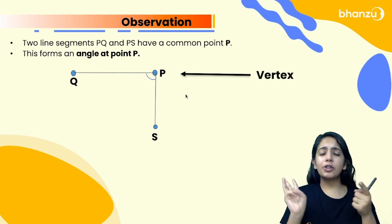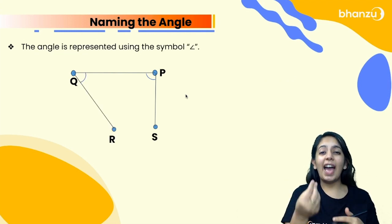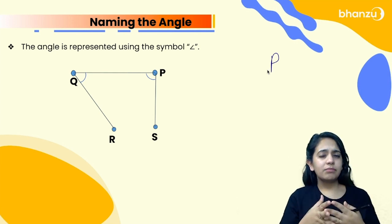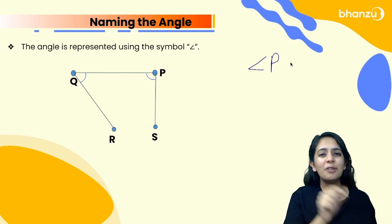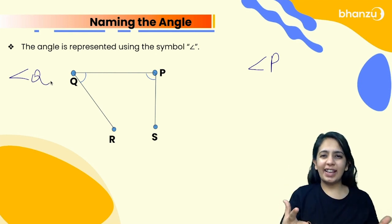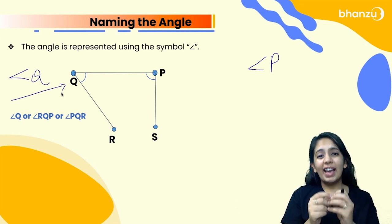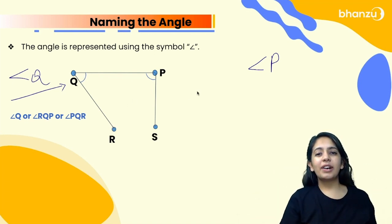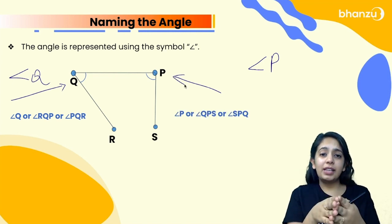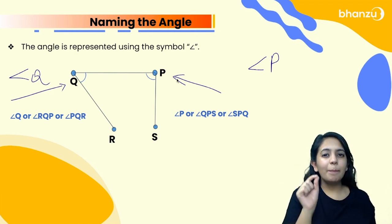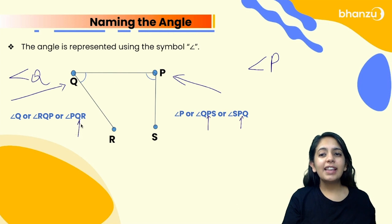Since we have learned how to name points, lines, line segments, and rays, let's learn how to name angles. There is a symbol used to represent an angle — if you write angle P, you must put this symbol before P so anyone knows you are talking about an angle. The angle here is angle Q. Because the vertex is Q, the angle is written as angle Q, angle PQR, or angle RQP. For the other case where the vertex is P, the angle is angle P, angle QPS, or angle SPQ. You can go clockwise or anticlockwise, but always write the vertex between the other two points.